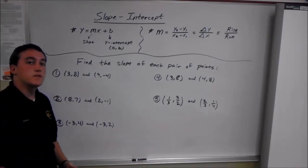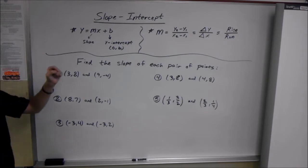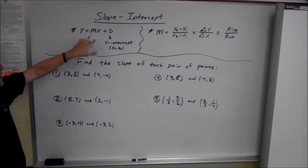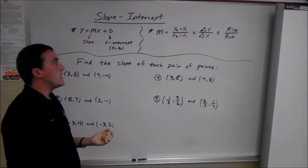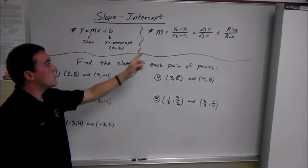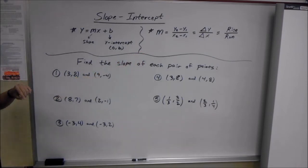In today's video we're talking about the slope-intercept equation, which is y equals mx plus b, and also just a plain slope equation.